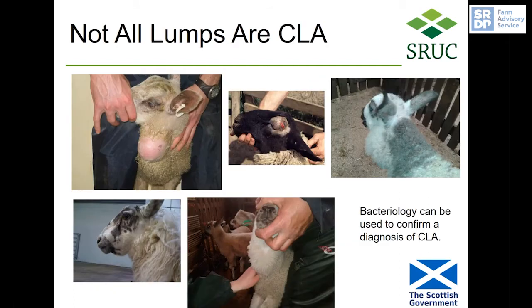Not all lumps are CLA, which means you can't assume that just because a sheep has a lump on its head or around its neck that it is infected with CLA — these pictures show a range of lumps and bumps, and none of them are CLA. If you have an abscess that bursts, you can get your vet to take a sample, which can be sent to the laboratory for bacteriology to see if they can grow the bacteria that causes CLA. If that bacteria is grown, that confirms your diagnosis of CLA.